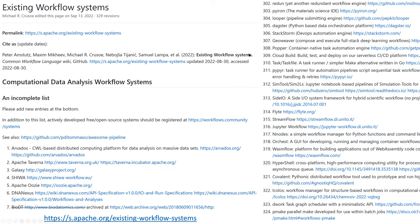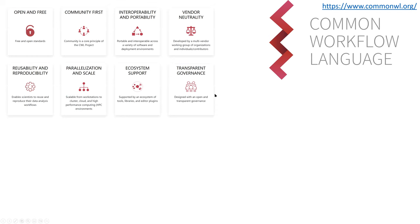Unfortunately, many people have had this good idea, so there are not just a few workflow systems. We are maintaining a wiki list — we now have 300 workflow systems known. People typically choose a workflow system based on what people around them are using and what works on their compute infrastructure.